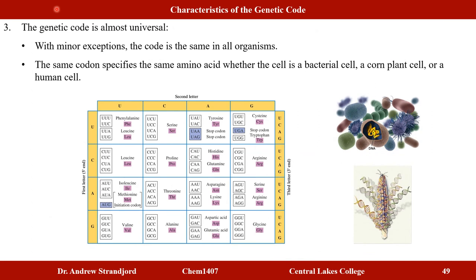The genetic code is almost universal — with a few minor exceptions, the same codons specify the same amino acids in all organisms, whether bacteria, corn, or human cells.